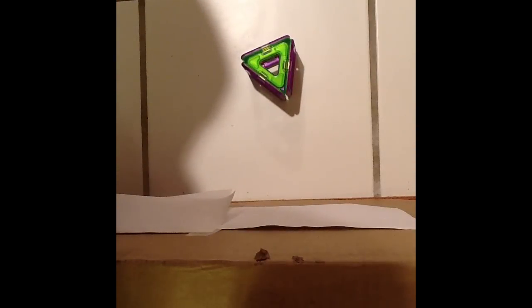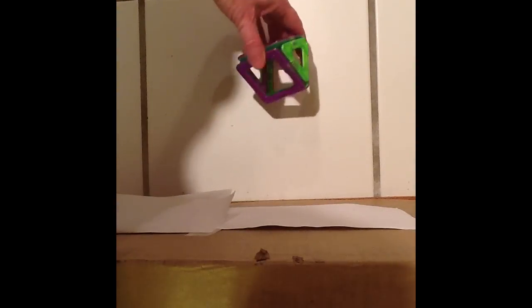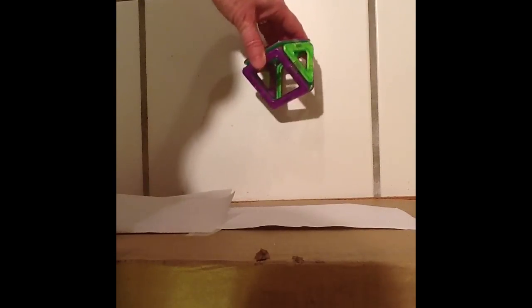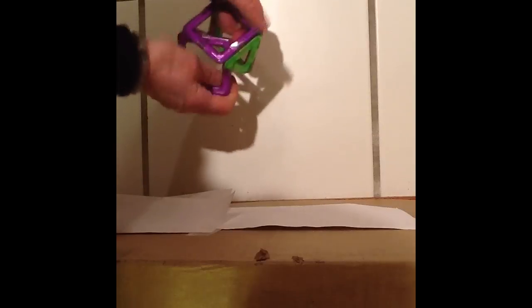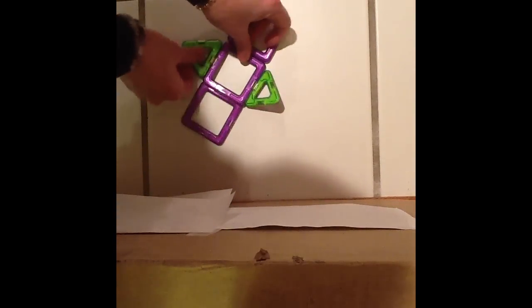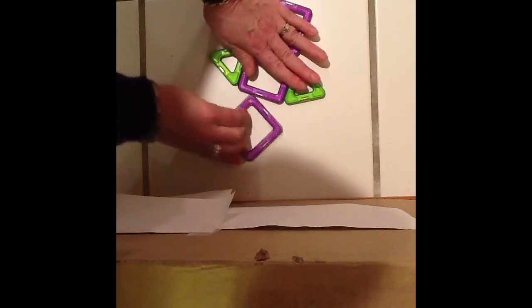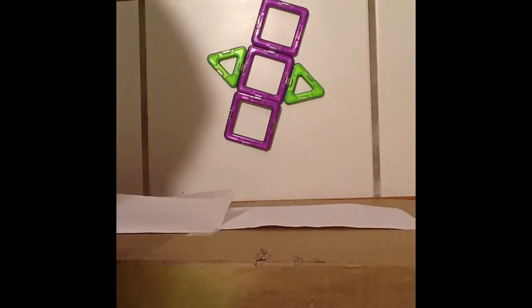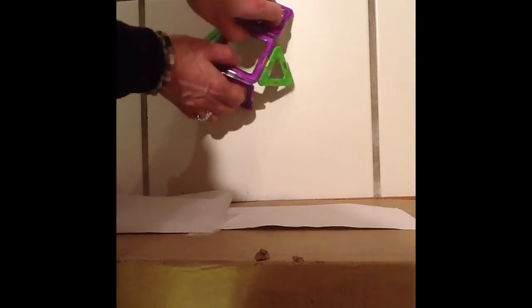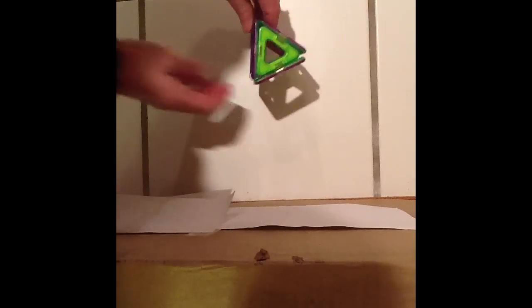The bases are triangles, so one of the words we would use to name this would be triangular. And because it has two faces, it's a prism. So this is a flat pattern, a net, for a triangular prism. When it folds up, it makes a prism with two bases, and the shape of the bases is a triangle.